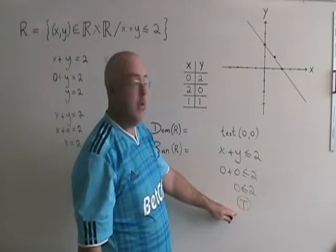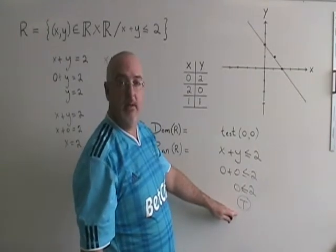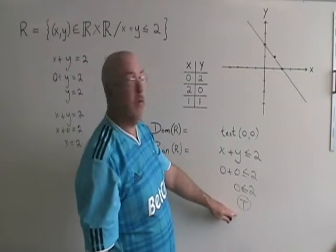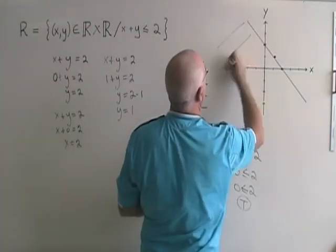When I get a true statement at the end of my test point, it means I shade towards the test point from the line, which means I am shading over here.